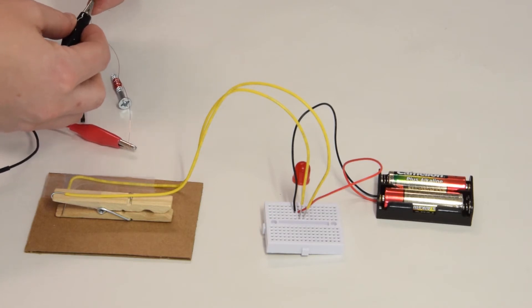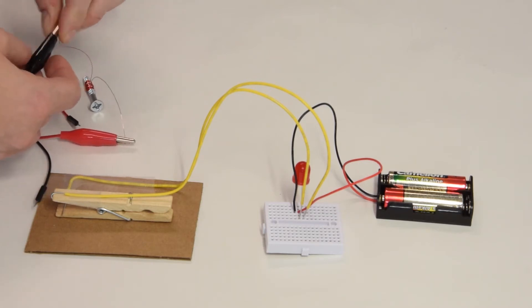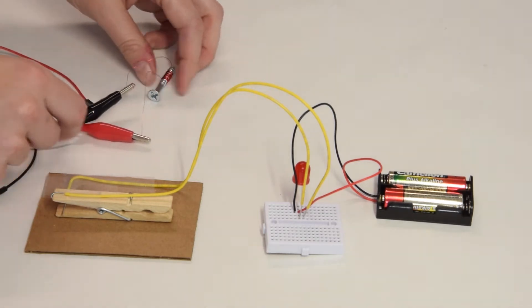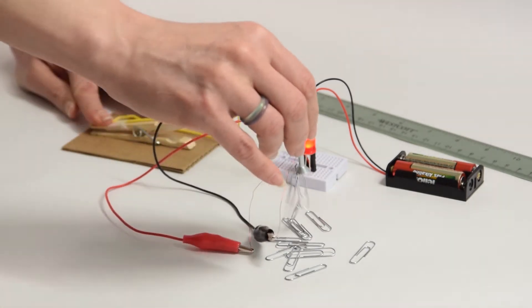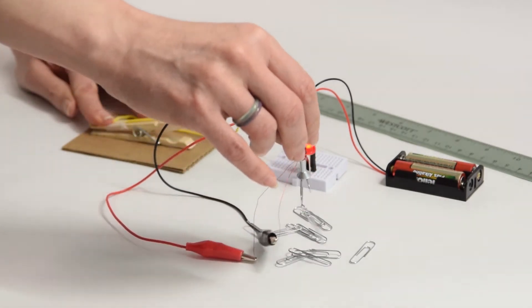Next, students use their completed circuit to construct a battery-powered electromagnet to see first-hand the important scientific relationship between electricity and magnetism. Then, they run trials to test the strength of their electromagnet by picking up paper clips.